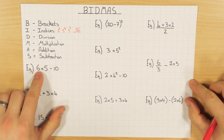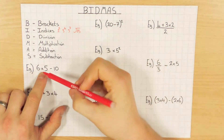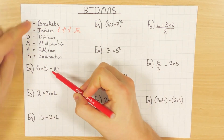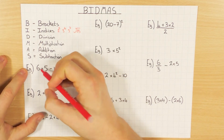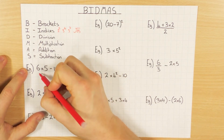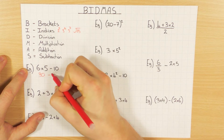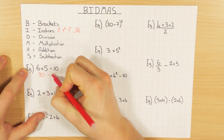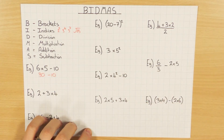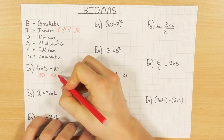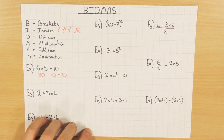In this first example I've got a multiplication and a subtraction, so multiplication comes first. I do 6 times 5 which is 30, bring the rest of it down, and then do my subtraction: 30 take away 10 is 20. Nice and simple.